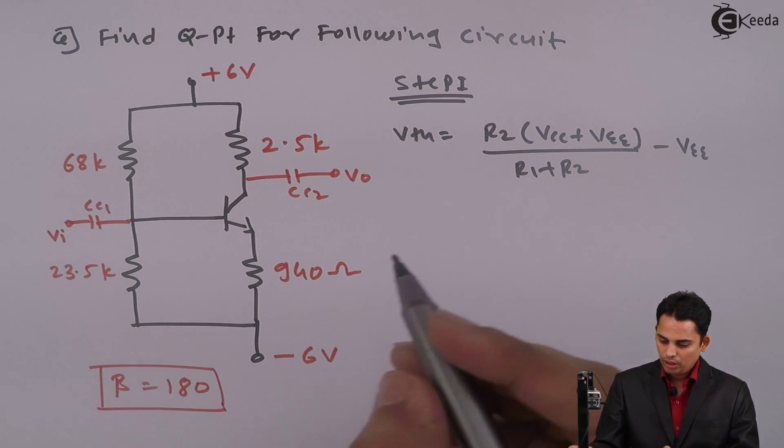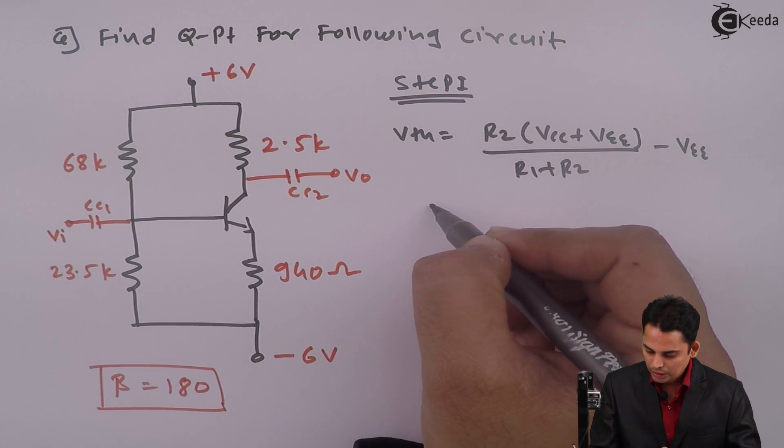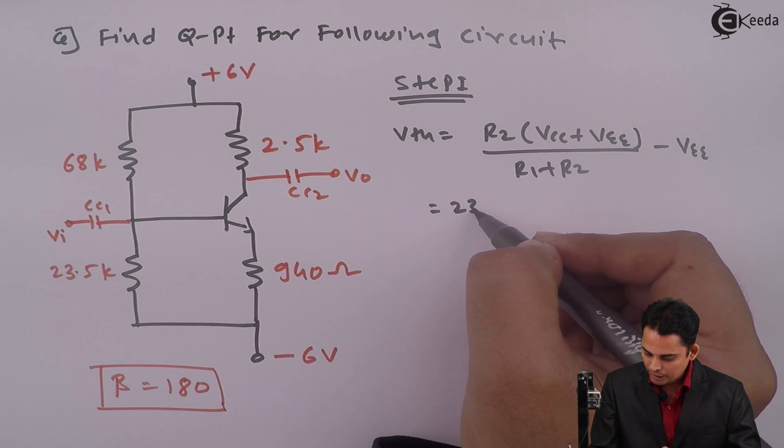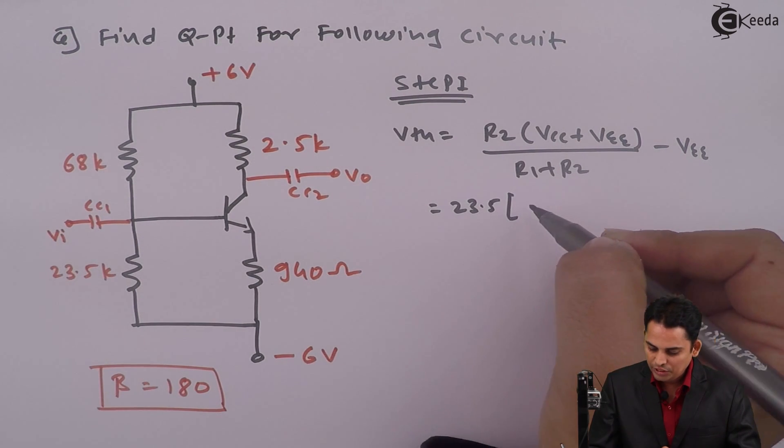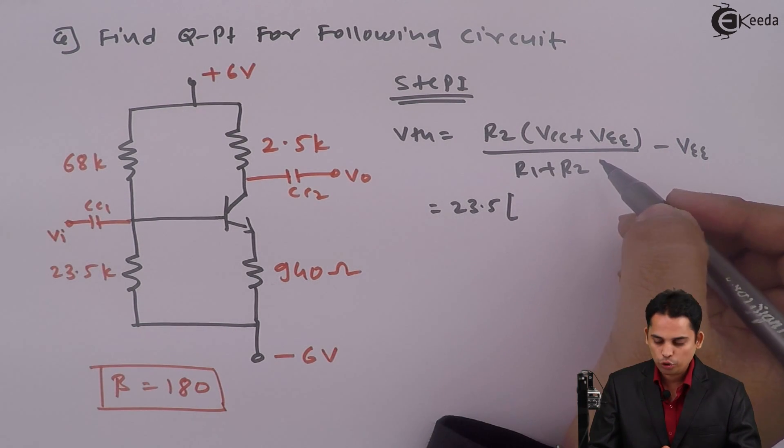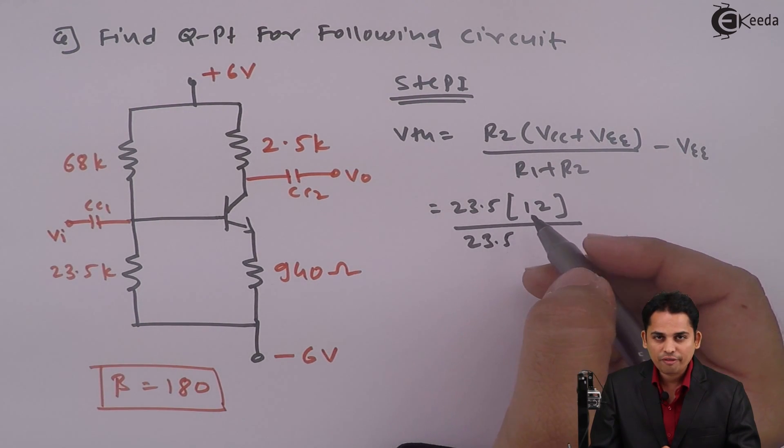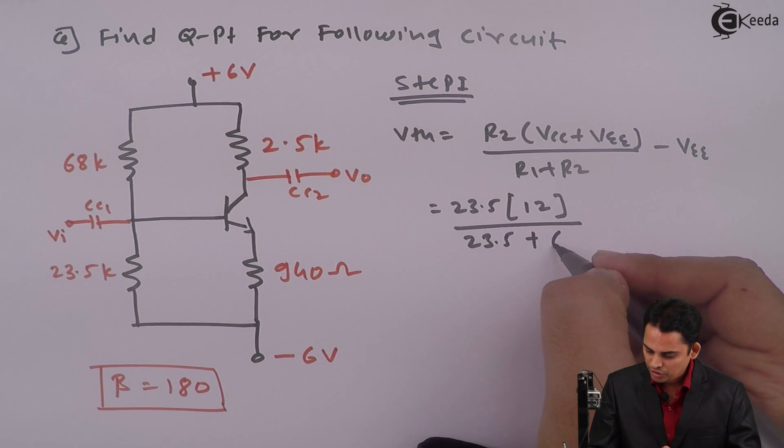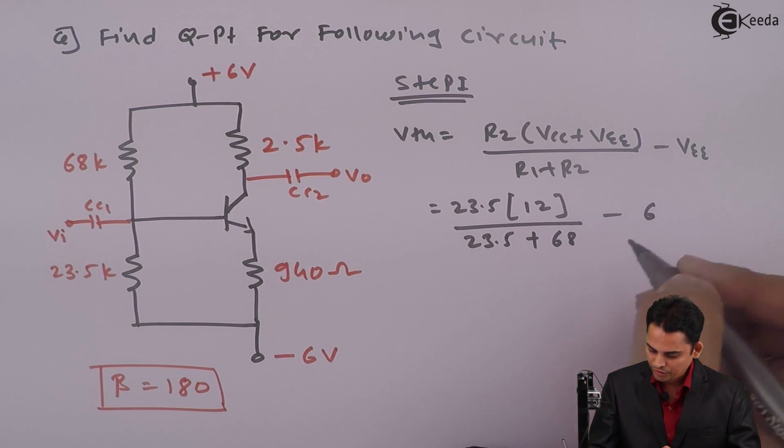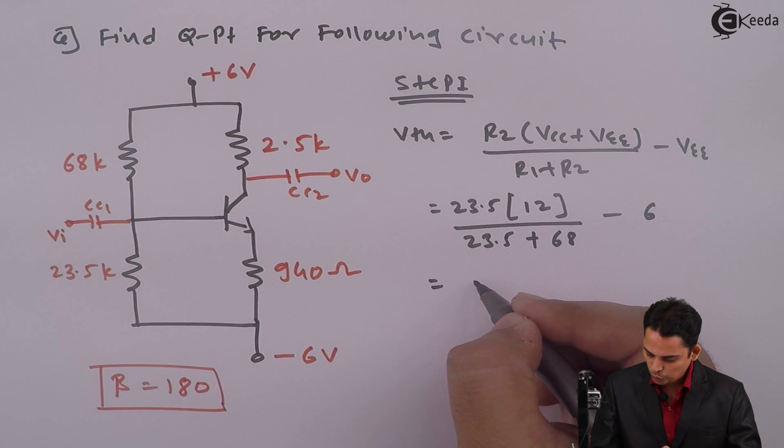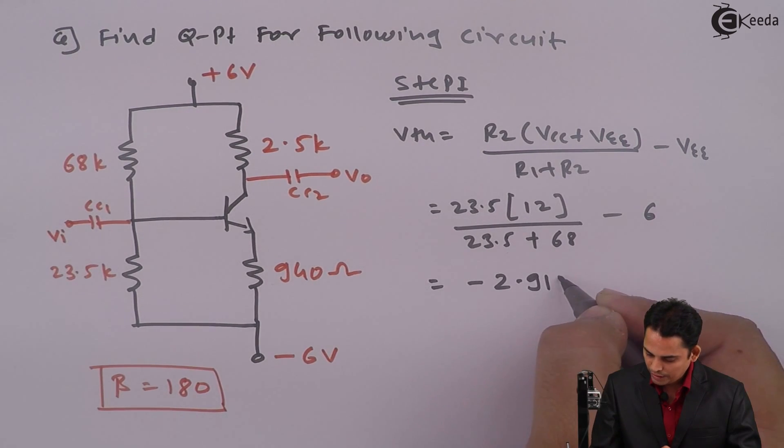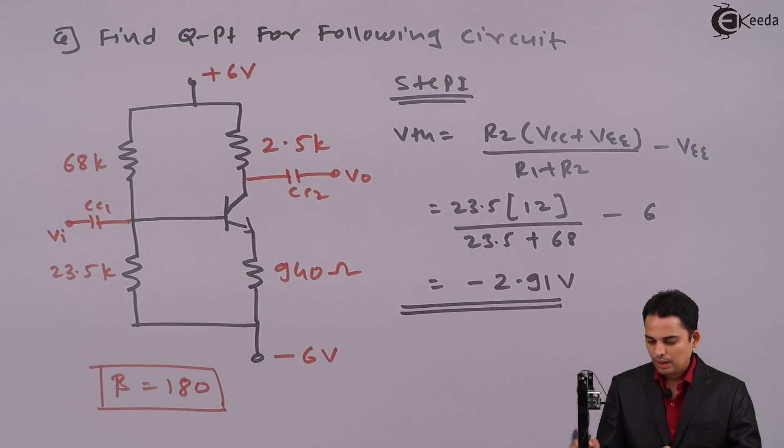VEE. Let us see the equation. If we substitute the values, R2 is 23.5 K, VCC is 6 and VEE is also 6. So it will become 12 divided by 23.5 kilo plus 68 kilo minus 6. So value is equal to minus 2.91 volts. Now this is the value of VTH.